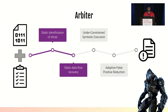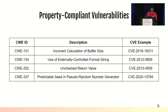We combined these techniques and created the Arbiter analysis platform. From the user, it expects a vulnerability description specifying the three properties related to the vulnerability, as well as the target binary application. It then performs multiple analyses in combination to detect vulnerabilities satisfying the vulnerability description in the target application. We identified several CWEs that satisfy these properties — which we call property-compliant vulnerabilities — and chose four different CWEs as targets for our evaluation.